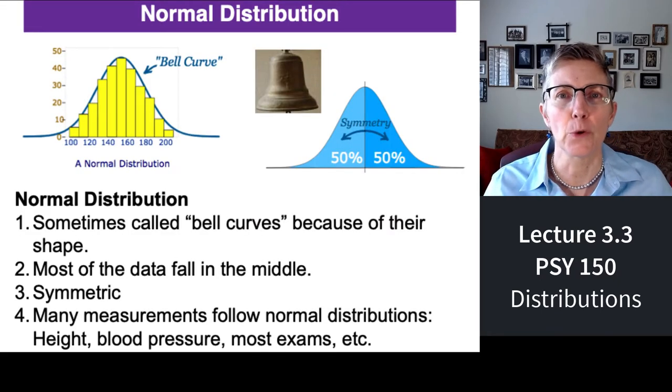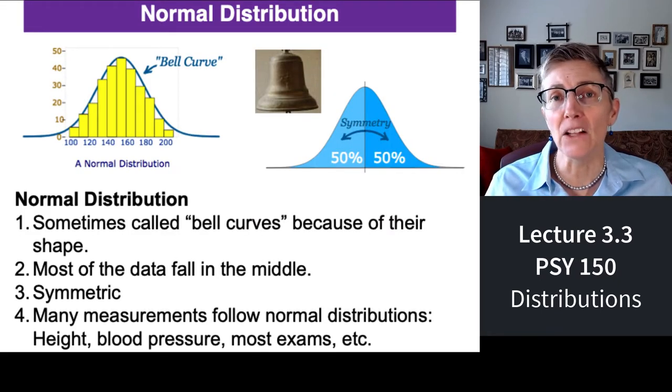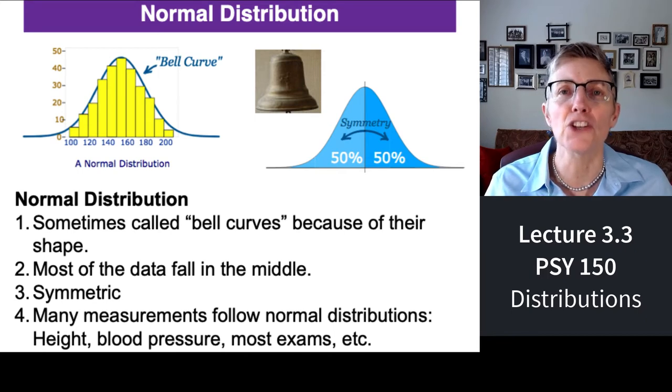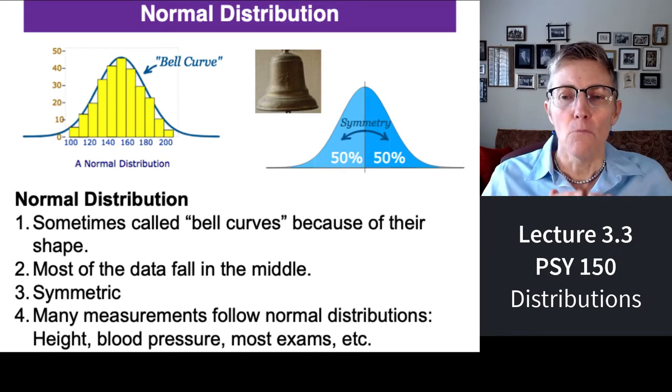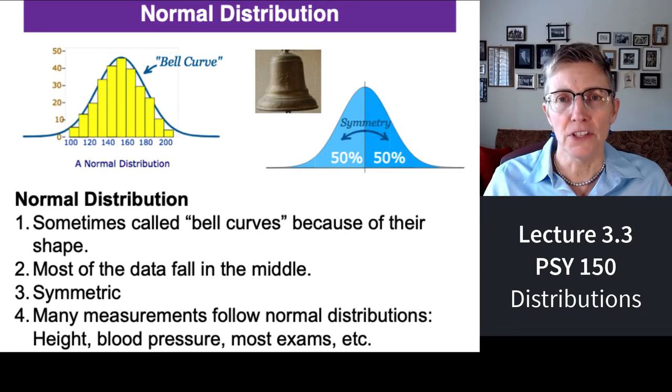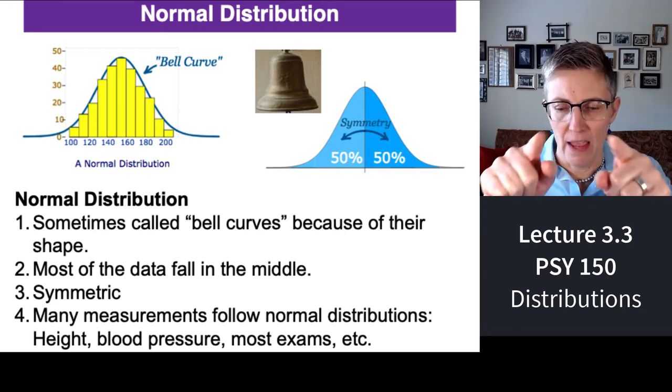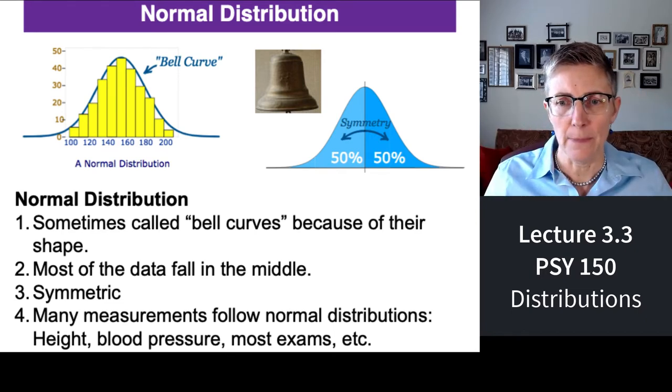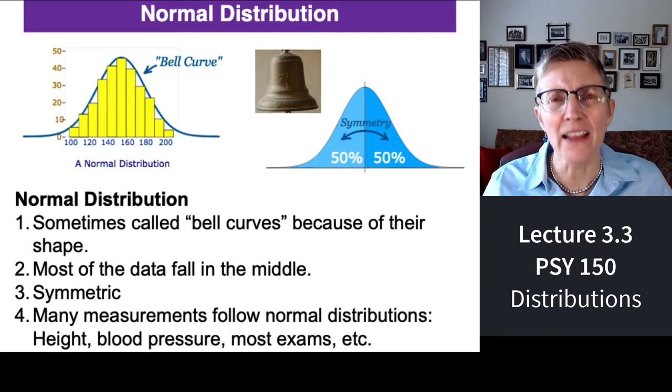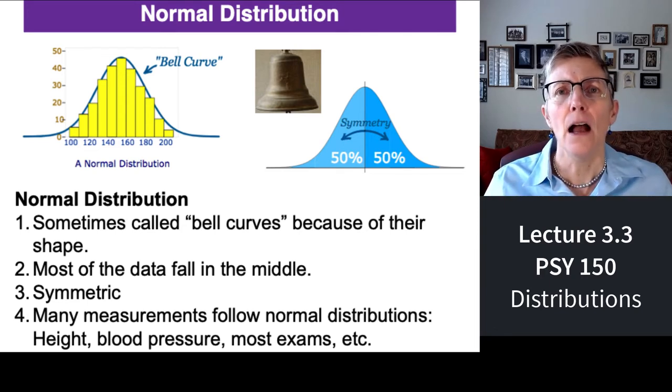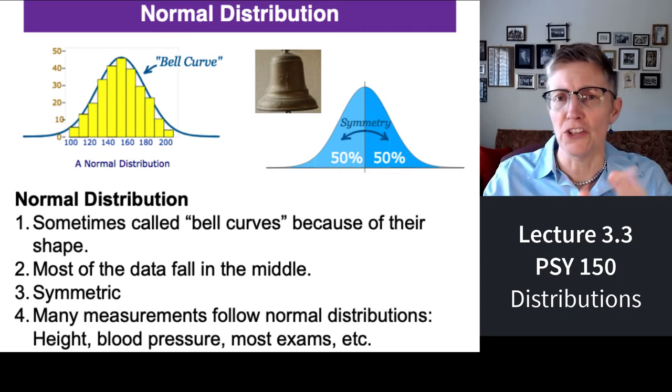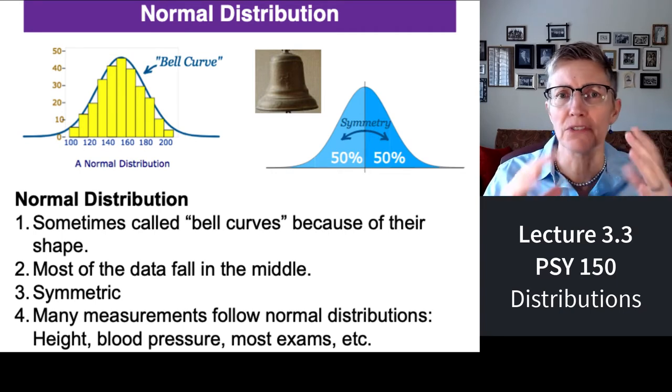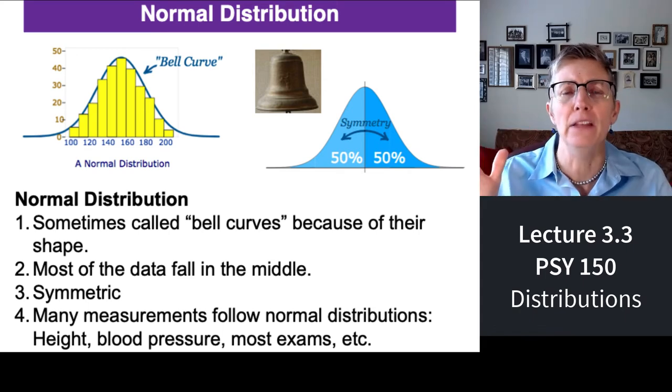Let's start with the normal distributions. Sometimes they're called bell curves because they're literally shaped like bells. Most of the data falls in the middle. So the peak is always in the middle and it's beautifully symmetric on either side away from the peak. You'd be surprised how much data falls on a normal distribution. Height, intelligence, blood pressure, exam scores, heart rate, you name it. All of those fall on normal distributions.